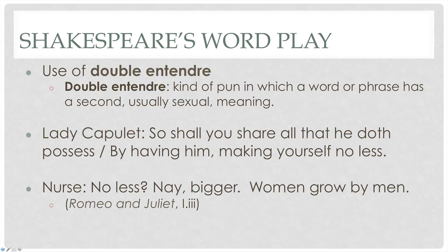Additionally, Shakespeare uses a lot of double entendre — a kind of pun in which a word or phrase has a double meaning, but usually that second meaning is sexual in nature. For example, Lady Capulet says, 'So shall you share all that he doth possess by having him, making yourself no less?' And then the comic character of the nurse says, 'No less? Nay, bigger. Women grow by men' — using 'grow by men' to imply that women get bigger when they are pregnant.